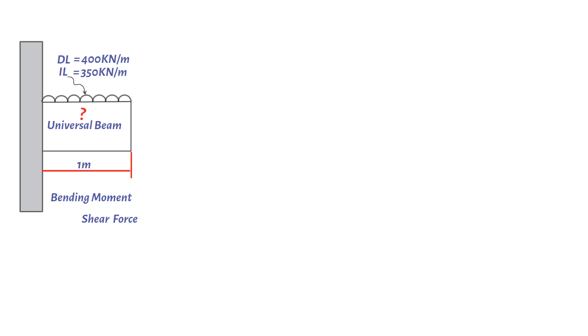First we will need to work out the design bending moment and shear force. Design shear force would be 1.35 multiplied by dead load 400 kN per meter plus 1.5 multiplied by imposed load 350 kN per meter multiplied by cantilever span one meter. This gives us a value of 1065 kN. Design bending moment would be the design shear force 1065 kN multiplied by one meter divided by two, resulting in a value of 532.5 kN meter.